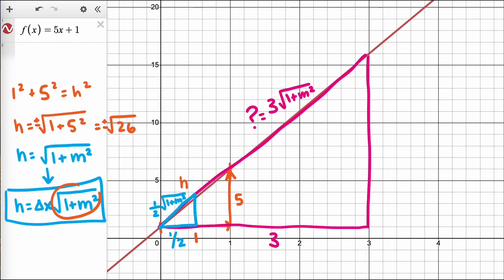This expression of the square root of 1 plus m squared can be thought of as a scaling value that stretches the length of the horizontal leg of a triangle to the length of the hypotenuse on a line with slope m.